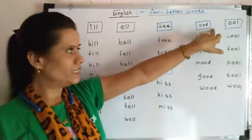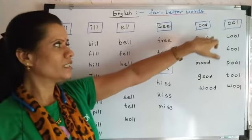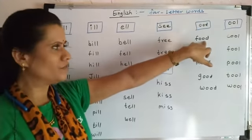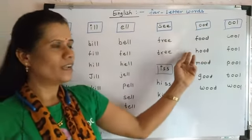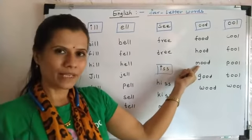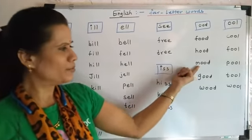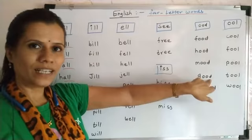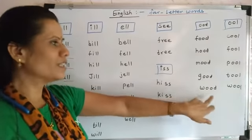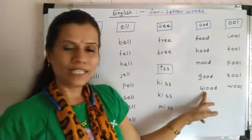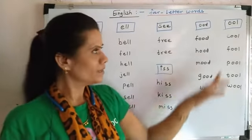O O D — would. F O O D — food. H O O D — hood. M O O D — mood. G O O D — good. W O O D — wood.